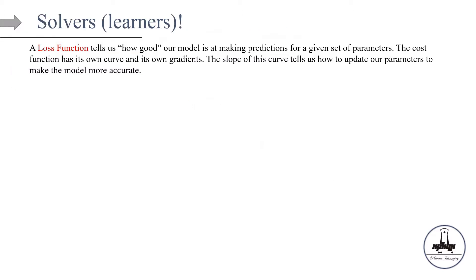So what are the solvers? What are the learners in machine learning? What are we trying to solve? What are we trying to optimize? The answer is a loss function. In machine learning, we are generally trying to optimize a loss function, and that loss function is going to tell us how good or bad the model is making predictions for a given set of parameters.